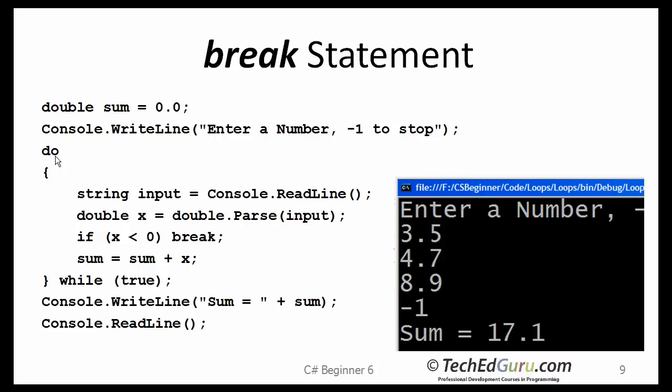The only condition here is that if you enter a negative number, then that is a signal that you are done entering all the numbers. In this case, run this program and it says enter a number, minus 1 to stop. I enter 3.5 first and 4.7 next and 8.9 after that.